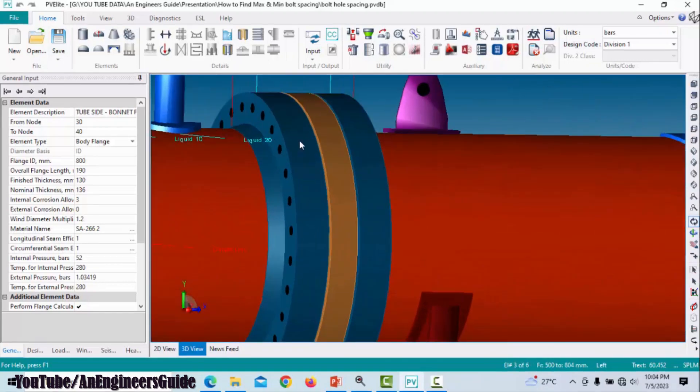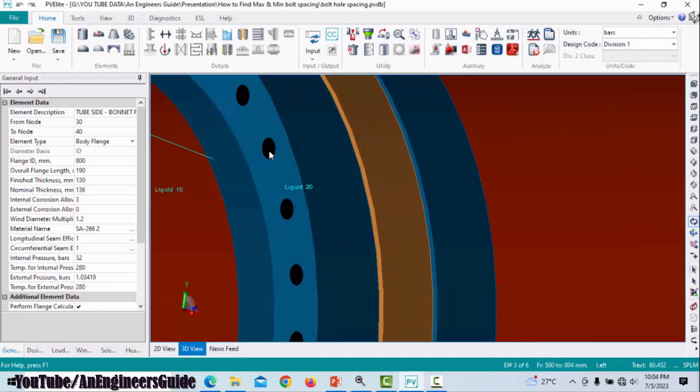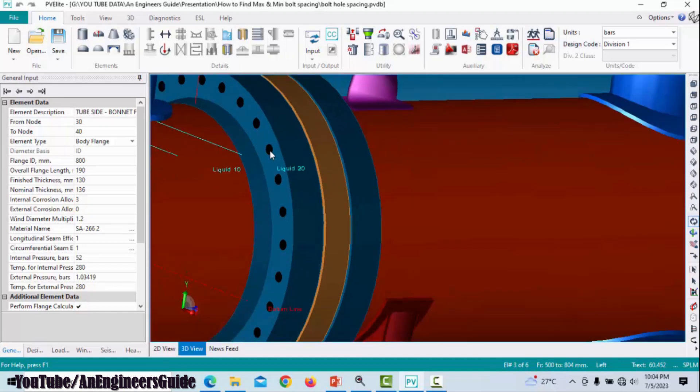Here you can see this is a girth flange and the holes are provided on this girth flange, which is nothing but the flange bolt holes.